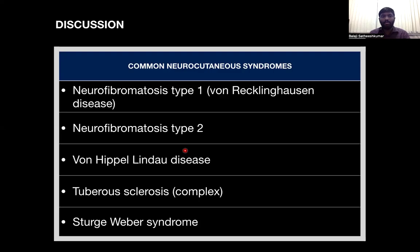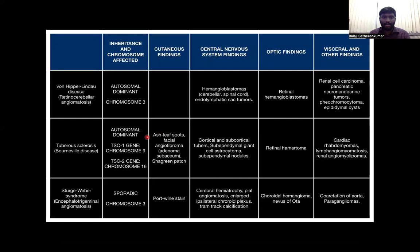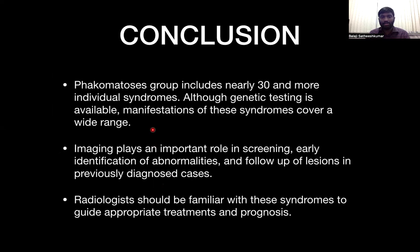In brief discussion, these are the common neurocutaneous syndromes we encounter, summarized in a table highlighting salient features. All of these neurocutaneous syndromes illustrated are autosomal dominant in inheritance, apart from Sturge-Weber syndrome which is sporadic. There are multiple cutaneous manifestations of these neurocutaneous syndromes which play a major role in diagnostic criteria. To conclude, the phacomatosis group includes nearly 30 or more individual syndromes. Although genetic testing is available, manifestations cover a wide range. MRI imaging plays an important role in screening, early identification of abnormalities, and follow-up of lesions in previously diagnosed cases. Radiologists should be familiar with these syndromes to guide appropriate treatment and prognosis.